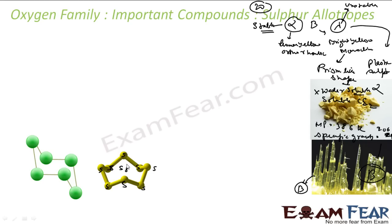Sulfur has so many allotropes: S2, S3, S4, S5, S6, S7, S8, all the way up to S20. We studied three allotropes — alpha, beta, and lambda. Both alpha and beta allotropes are S8.